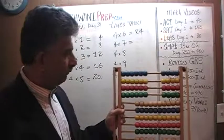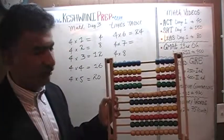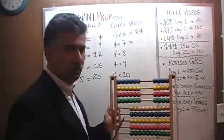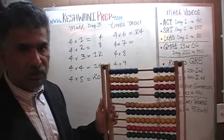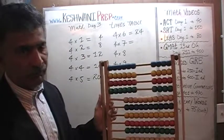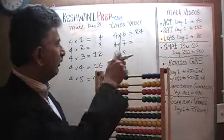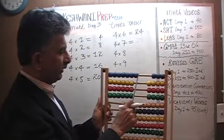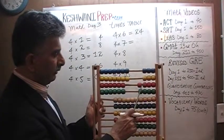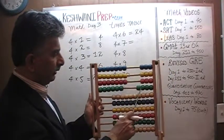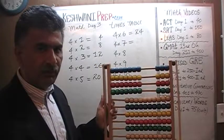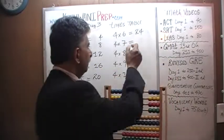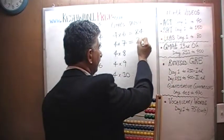How about four sevens? Well, we already have four sixes, and four sixes we know is twenty-four. Let's add one more to each group, so that will give us four sevens. We have twenty-four already; by adding one more to each group we get twenty-five, twenty-six, twenty-seven, twenty-eight. Four sevens are twenty-eight.